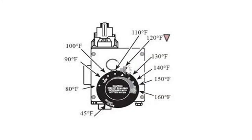Most hot water heaters have some sort of thermostat to tell the heat source when to turn off and on to maintain a preset hot water temperature. Electric hot water heaters have two heating elements immersed into the water and also two thermostats that work in conjunction to turn off and on the elements to maintain a preset temperature.